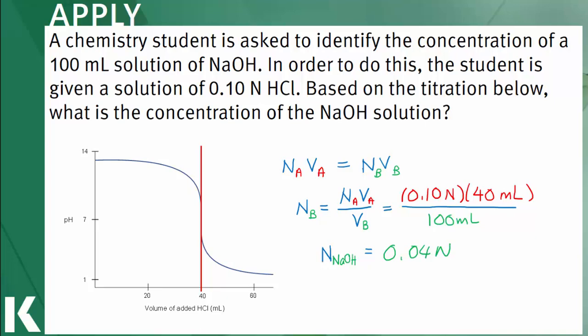Also note, since this is a titration between a strong base and a strong acid, it makes sense that the equivalence point is at a pH of 7.